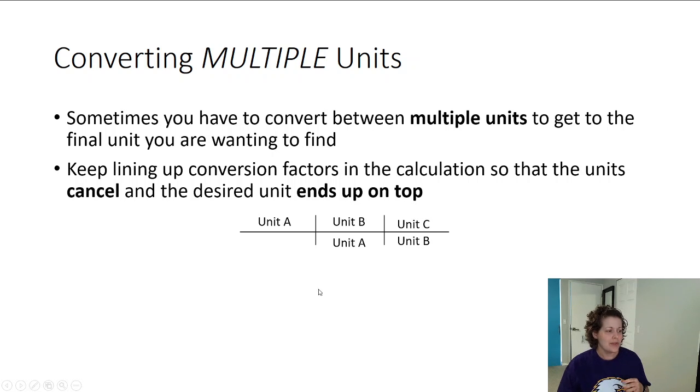I'm going to line up my unit A on the denominator, unit B on the numerator, that way my initial unit, unit A, will cancel out. Then in my second conversion factor, I'm going to put unit B on the bottom so that it cancels with unit B, and then unit C on the top, because that's my desired unit, and that's what I want to find.